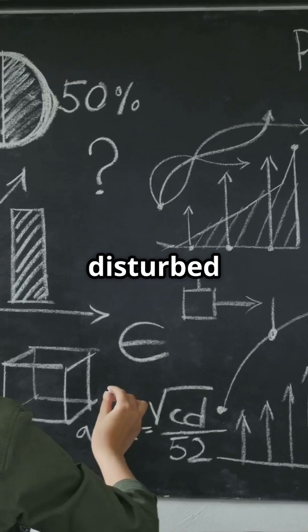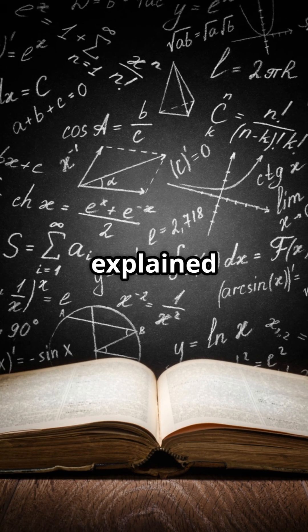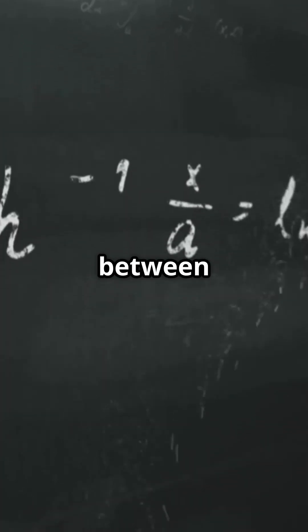A mathematical enigma that deeply disturbed the Pythagoreans, an ancient Greek philosophical school that believed everything in the universe could be explained by rational ratios between whole numbers.